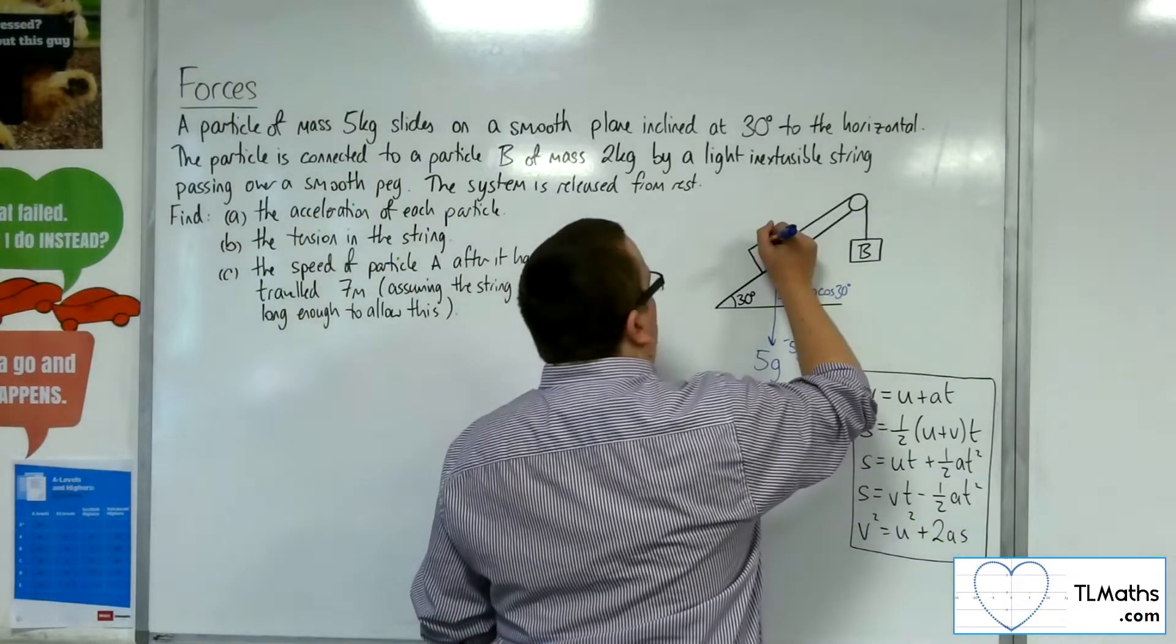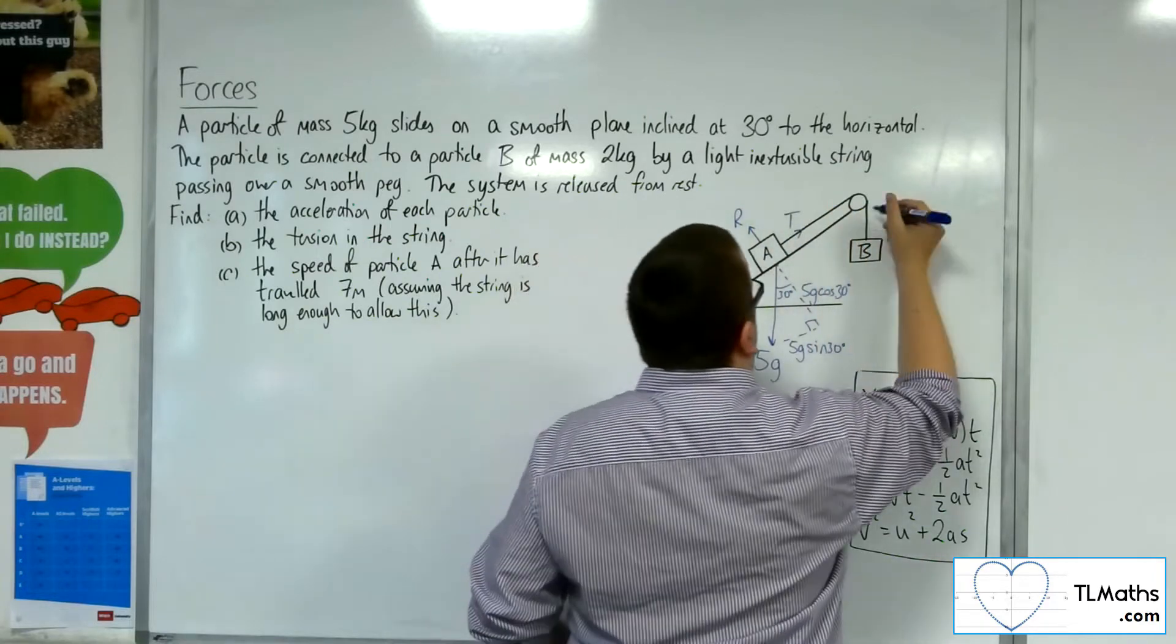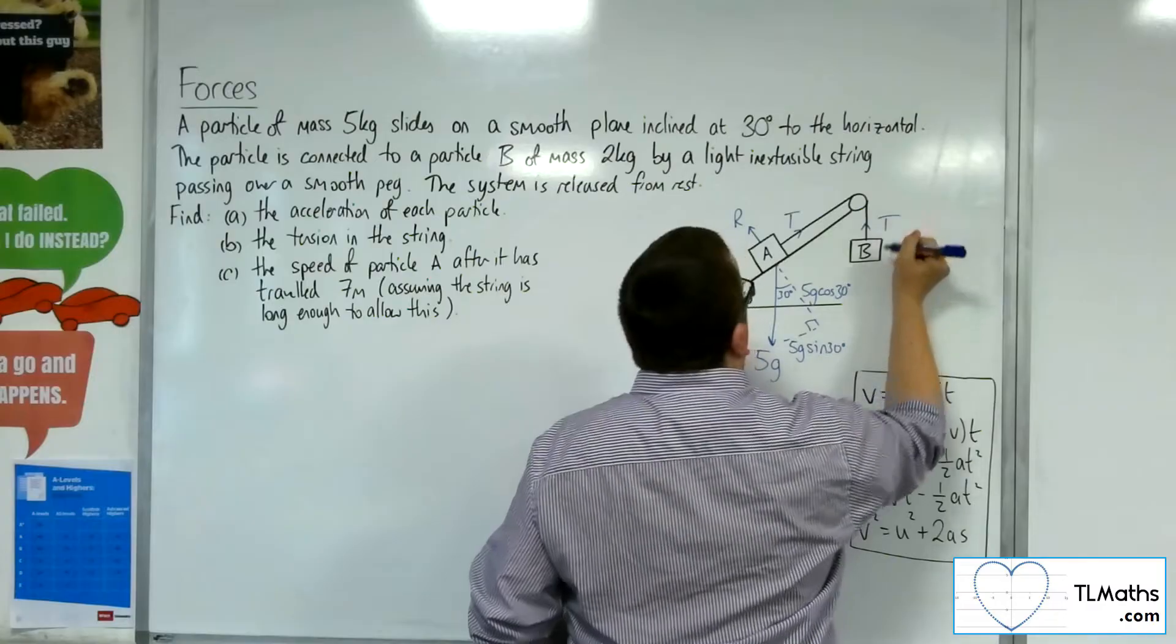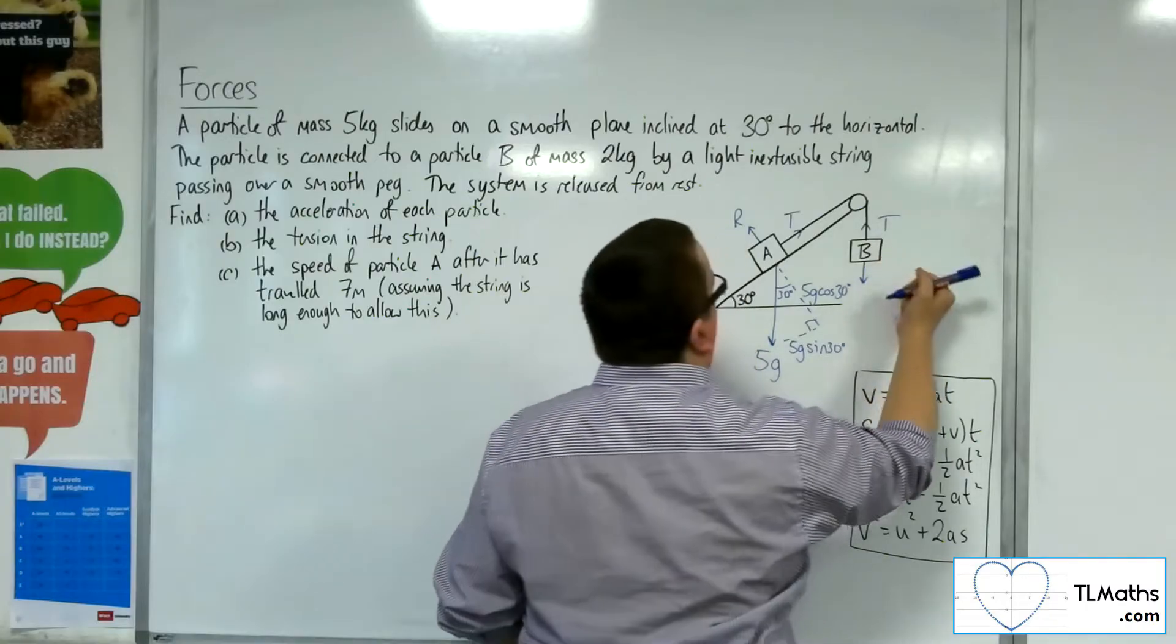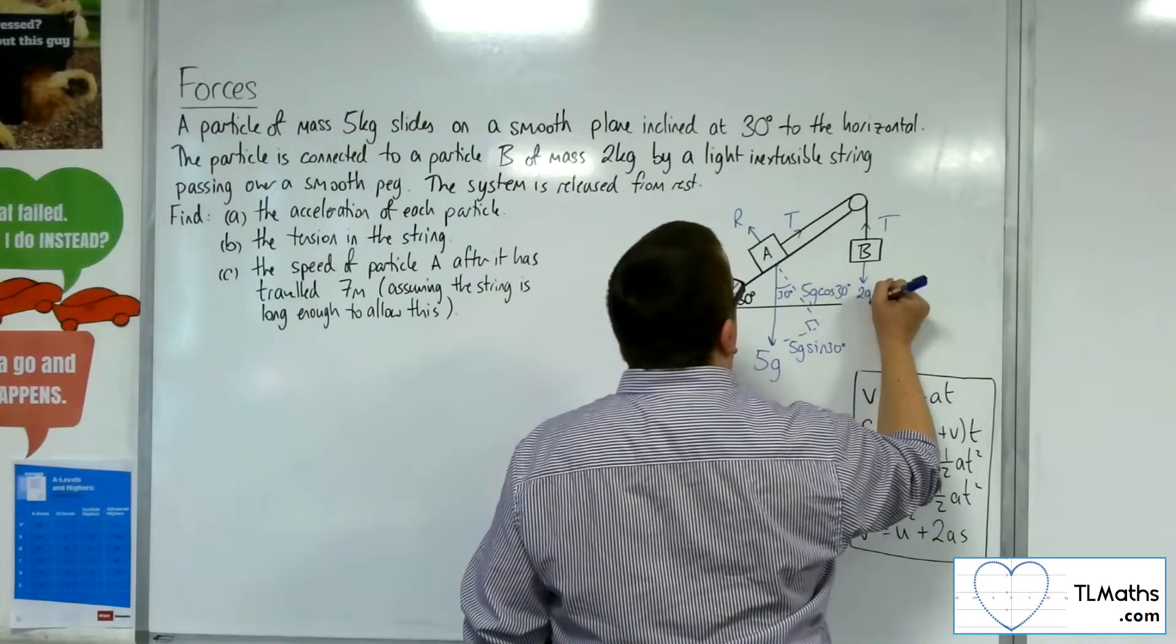There's going to be a normal reaction force, R. There's going to be a tension in the string. For particle B, there's that same tension in the string. And working vertically downwards is its weight, so it's got a mass of 2 kilos, so its weight is 2G.